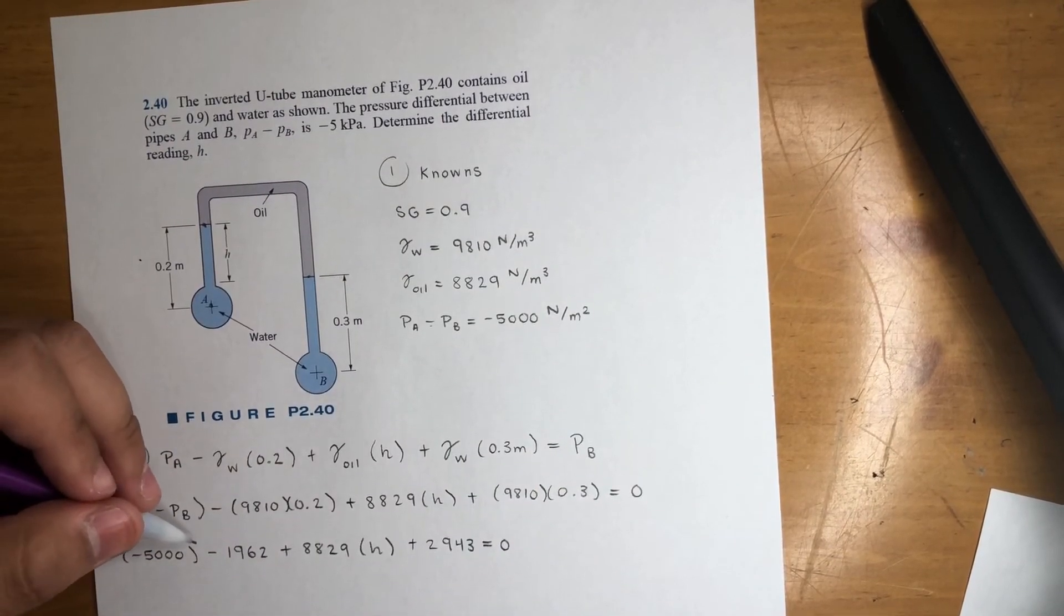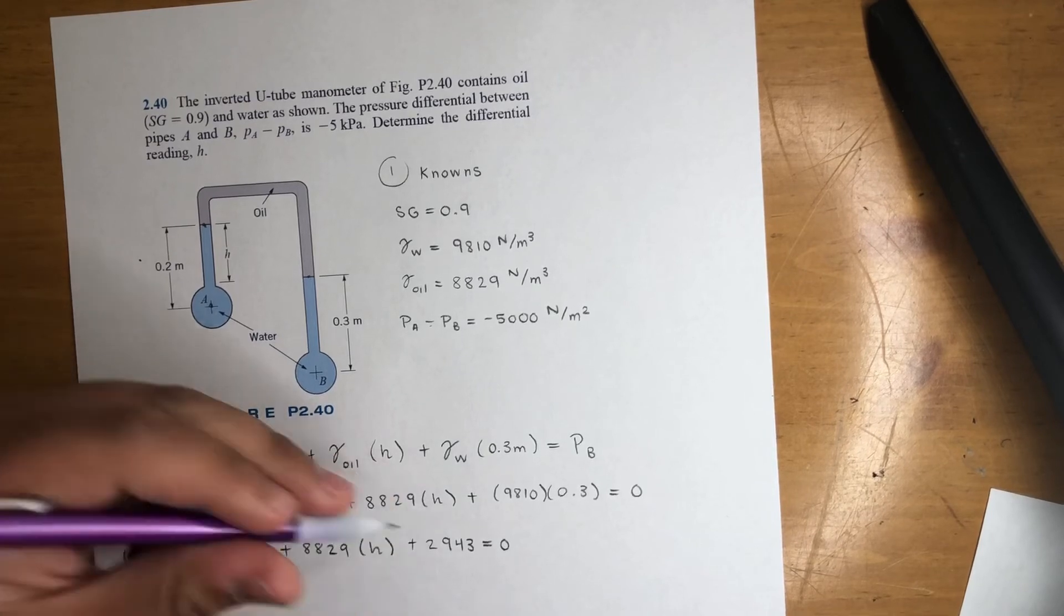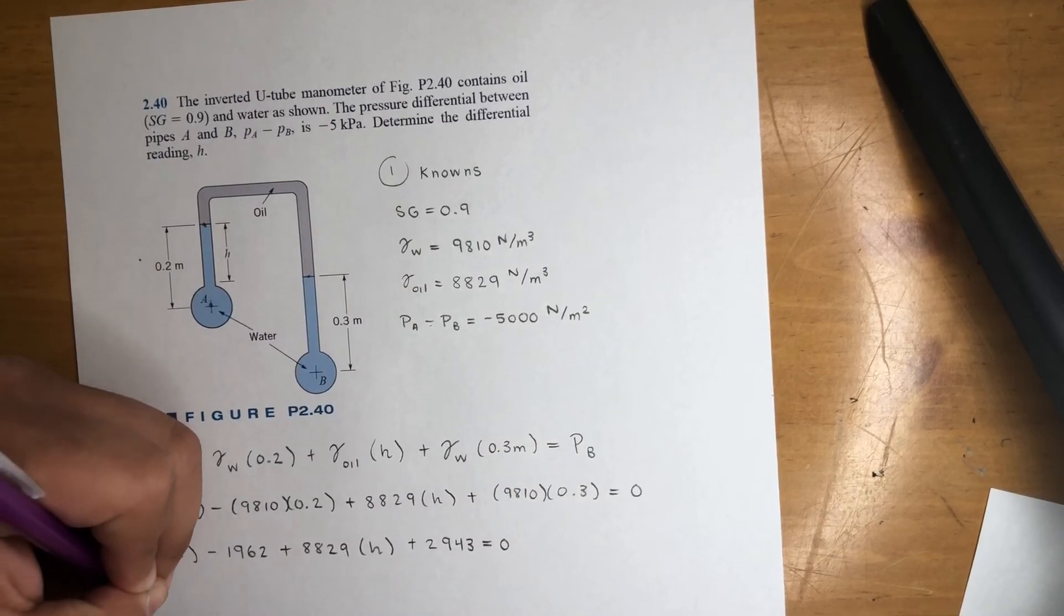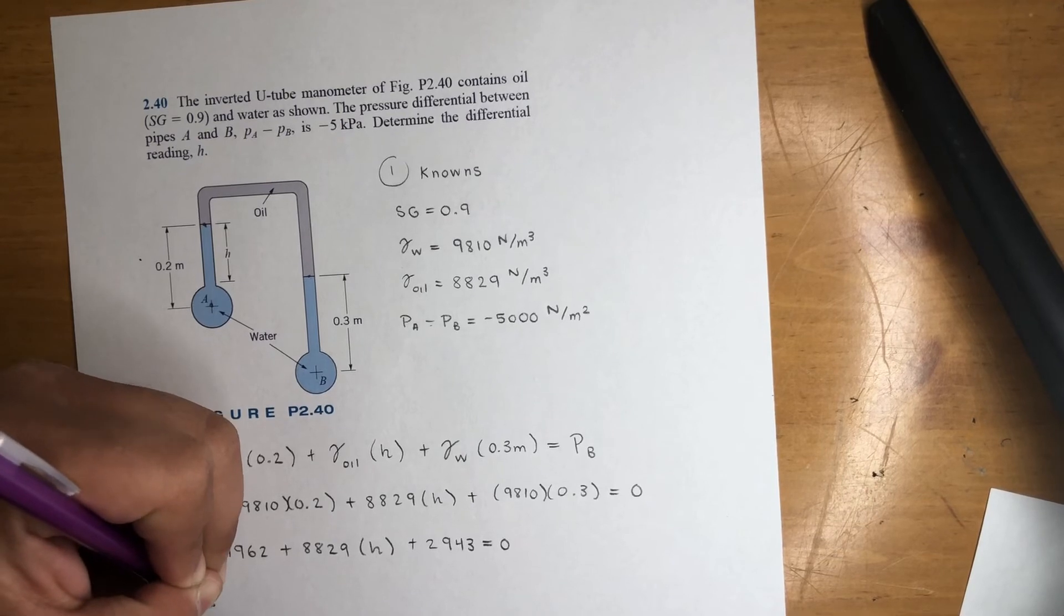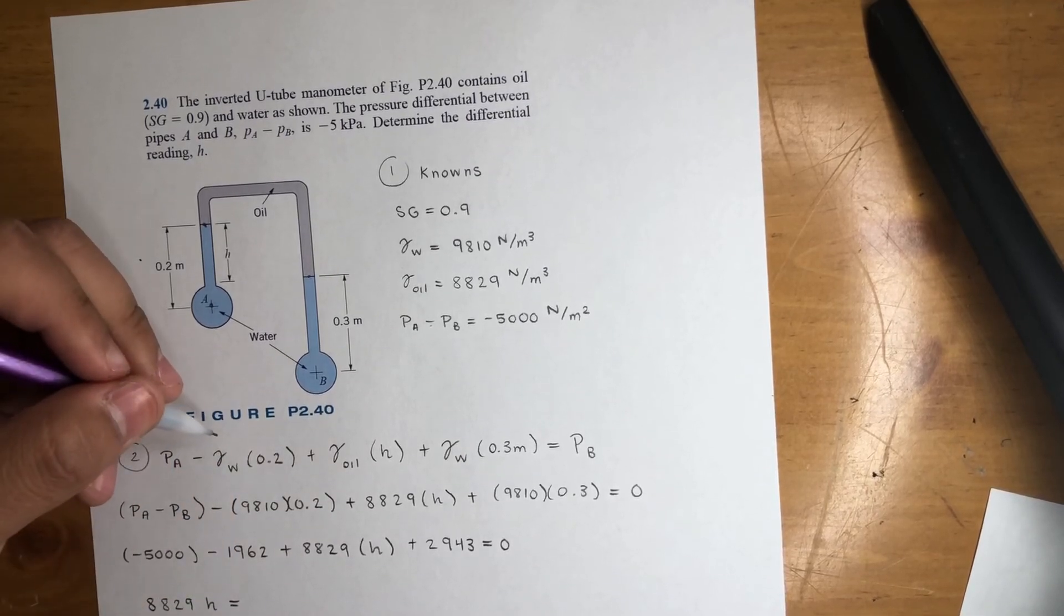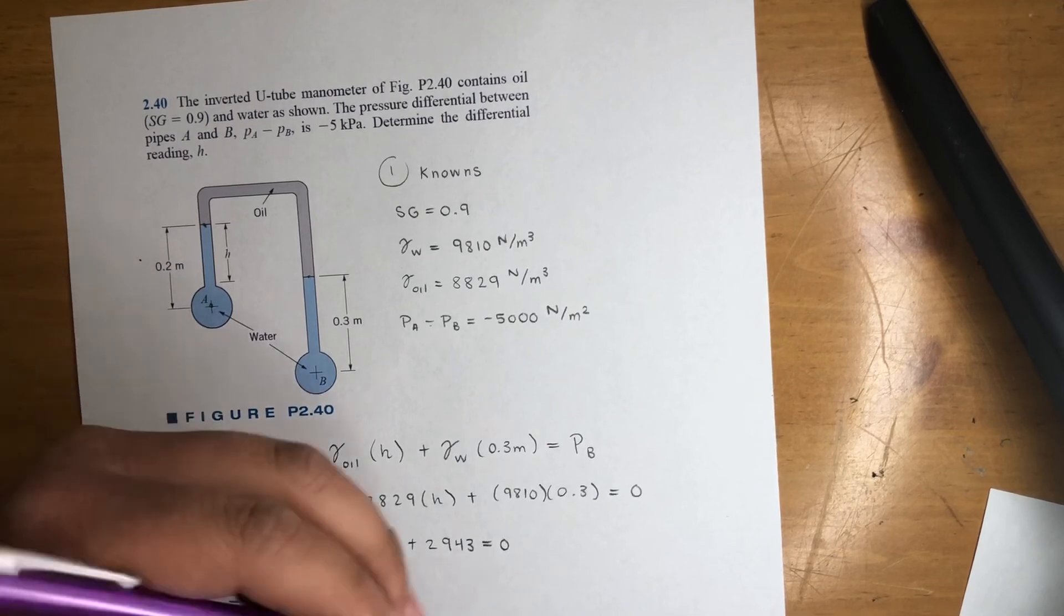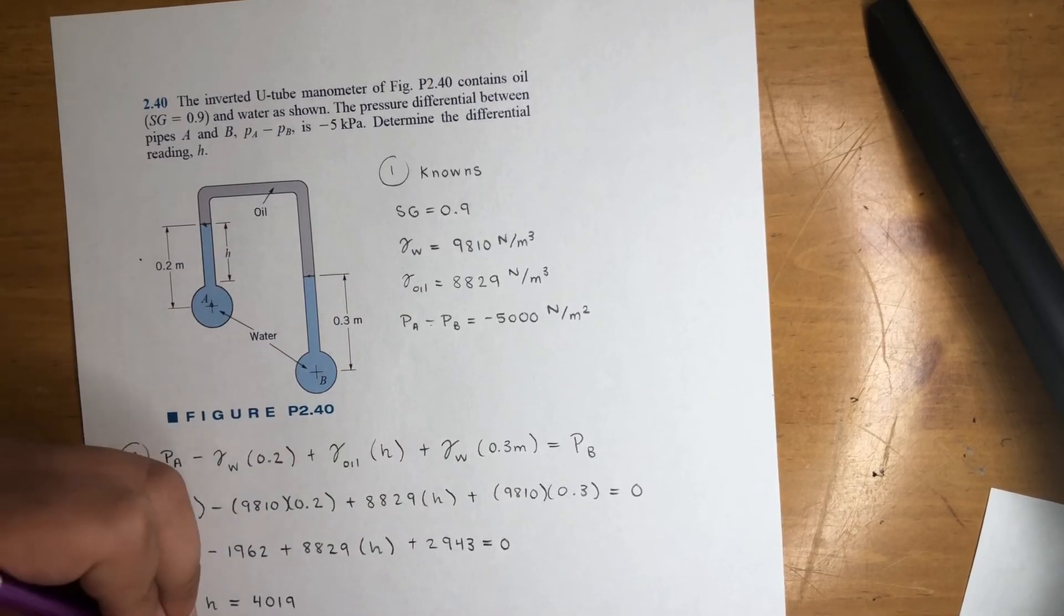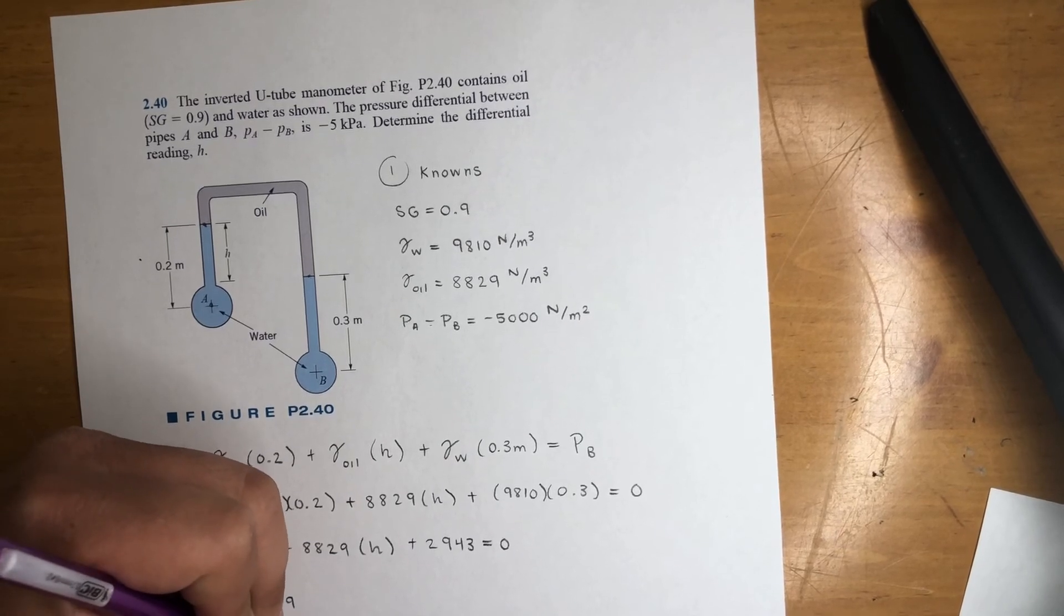So we combine every unit. What I'm going to do is I'm going to add all these three. There's two negatives, but I'm going to add them all three and move them to that side. So you'll end up with 8829 H is equal to, if you add all these three, you'll get negative 4019. But if you move to the other side, you'll get a positive 4019. And solve for H, you should be good at 0.455 meters.